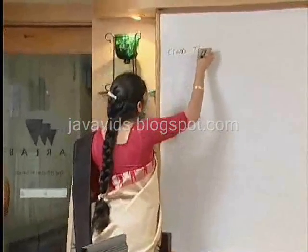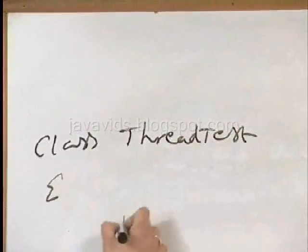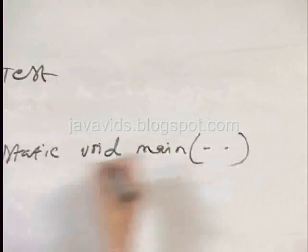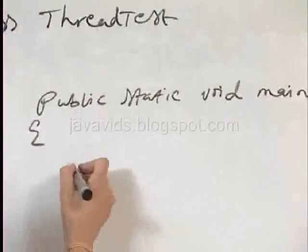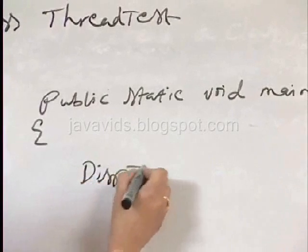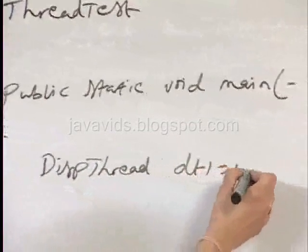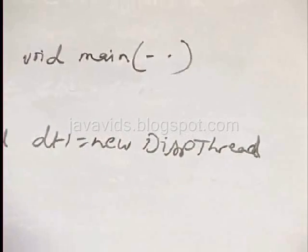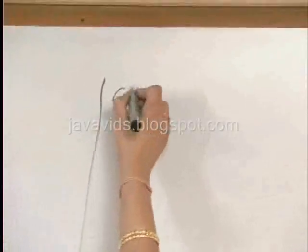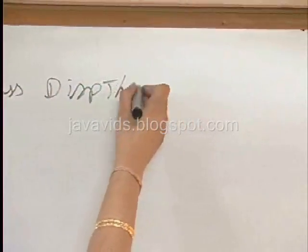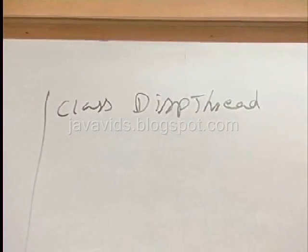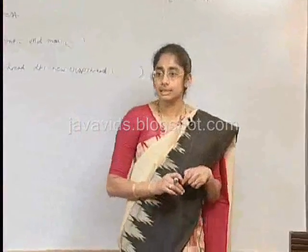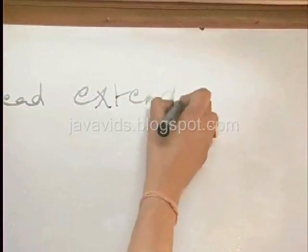We will have class ThreadTest with public static void main of string array. Here we will create a new DispThread object. What is DispThread? We have a class DispThread. Let's follow the steps: we are going to look at the first method — extending by the Thread class. First method says: extend a class from the Thread class. So we have a class which extends from Thread.